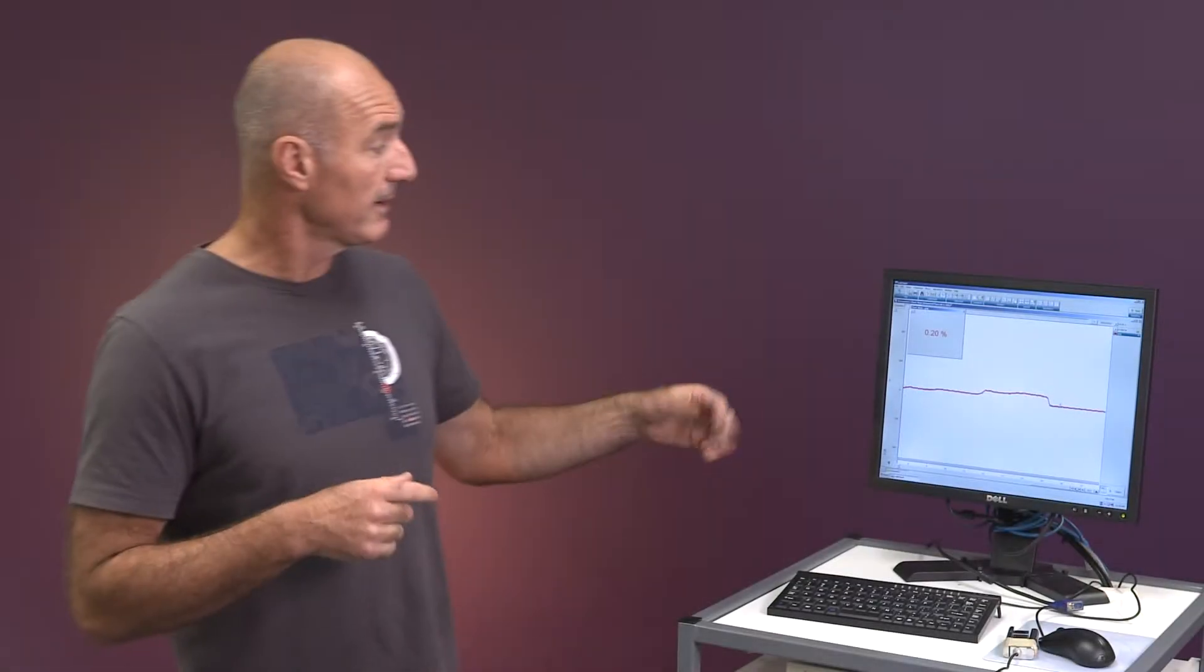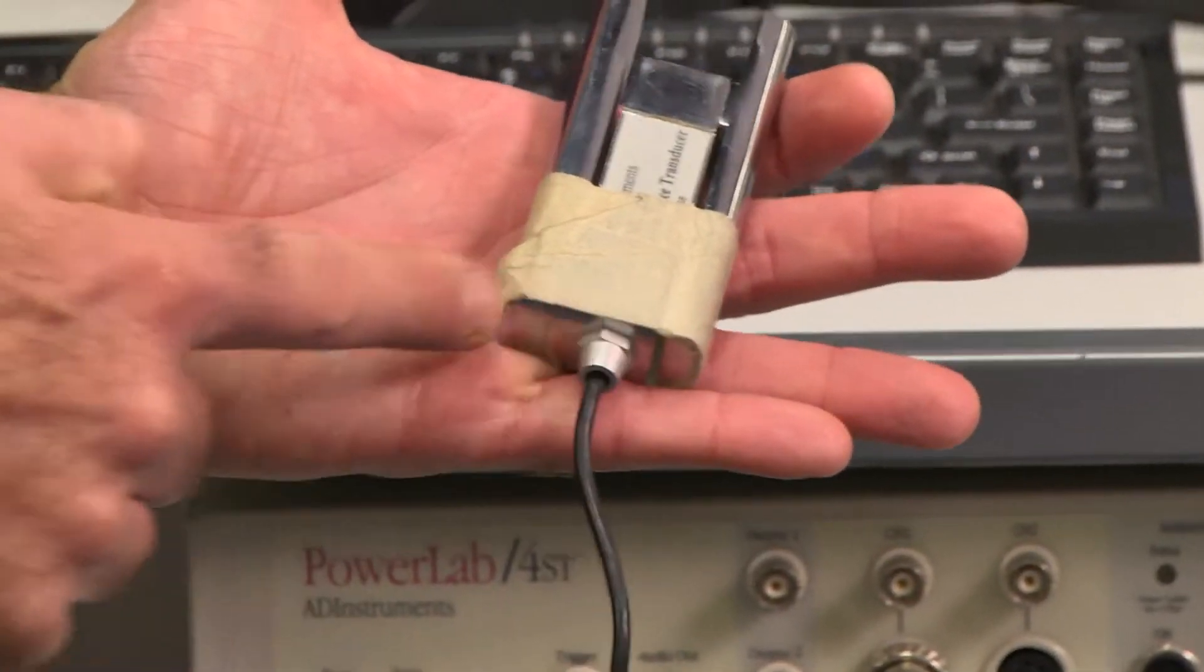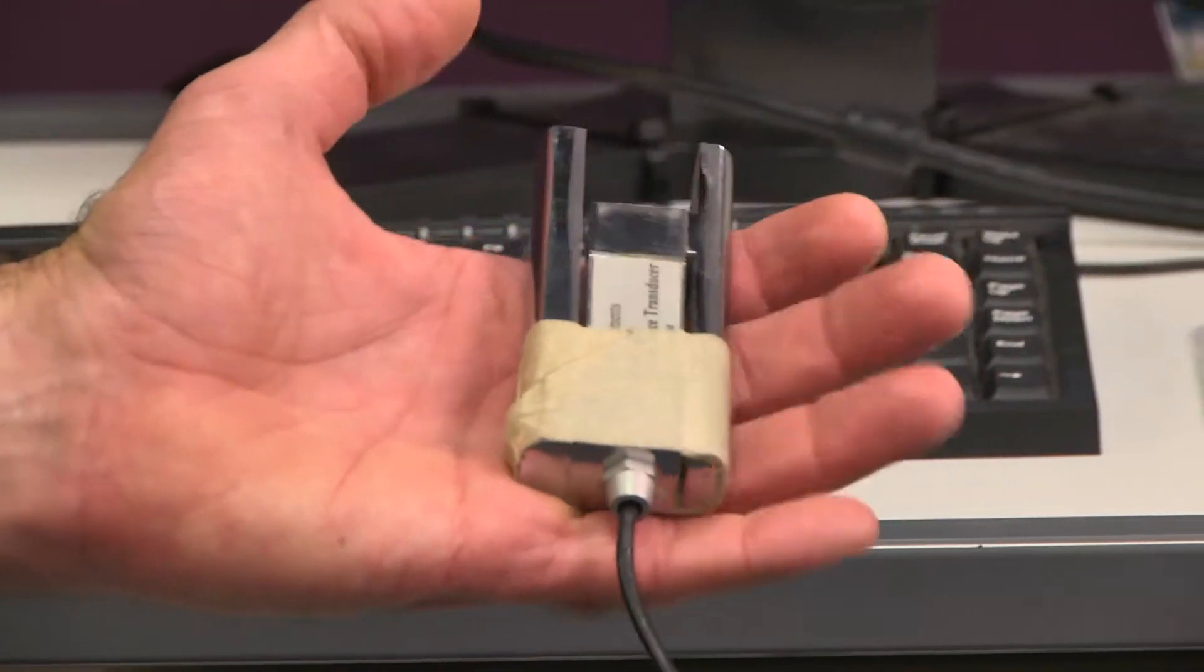Now what you'll do here is we've got this nice hand grip dynamometer, it's an electronic one and probably the important teaching point here, make sure you grab the bottom.